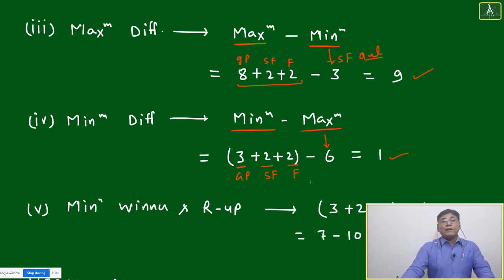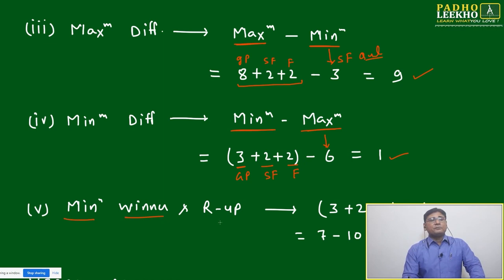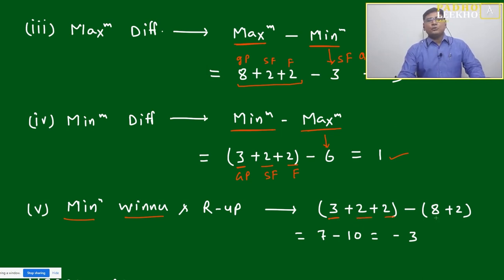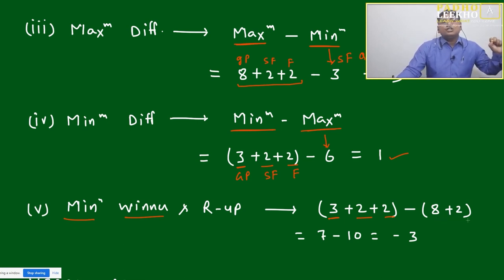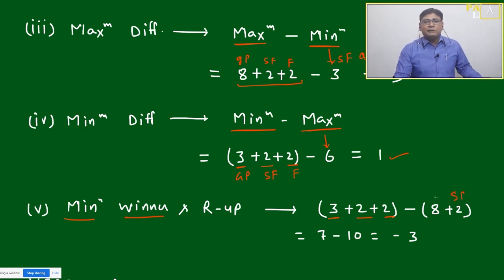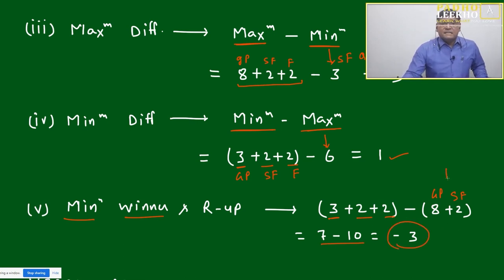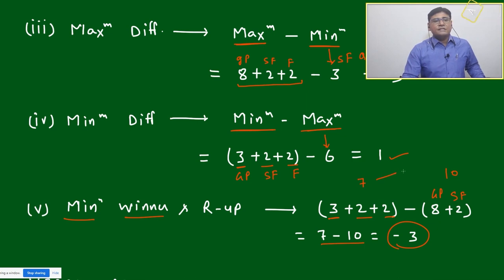Next: minimum difference between the winner and the runner-up. One team can win by qualifying with 3 points from the group, winning the semi-final and final: 3 + 2 + 2 = 7 points. The runner-up can be someone who got 8 points in the group stage, won the semi-final, but lost the final: 8 + 2 = 10 points. So 10 minus 7 = 3. A team with 10 points can be the runner-up while another with 7 points lifts the trophy.